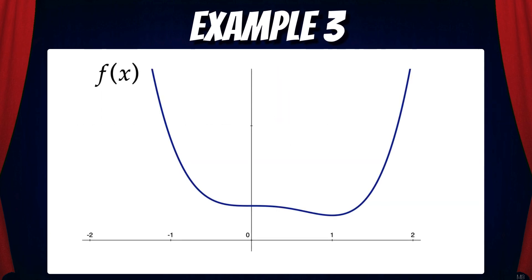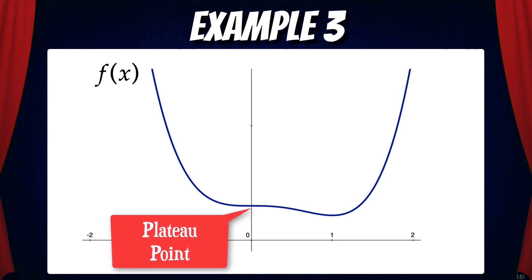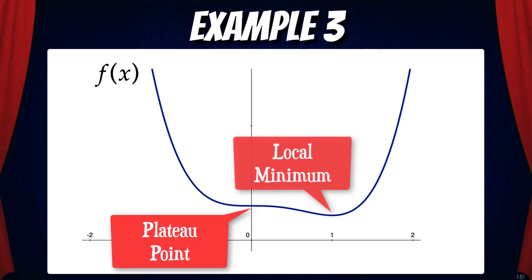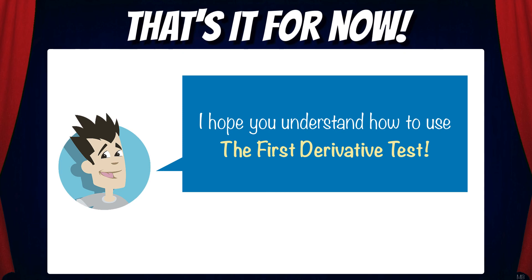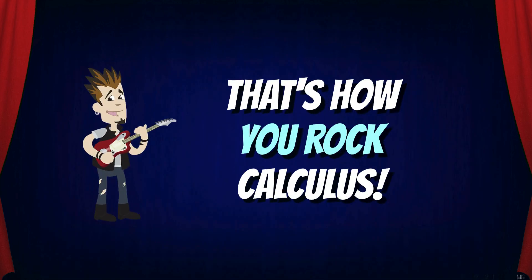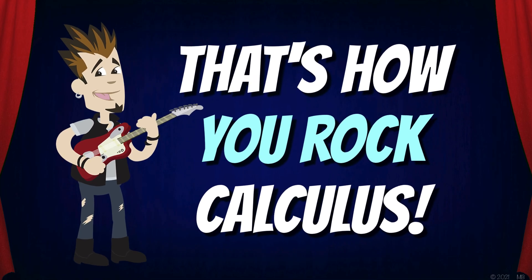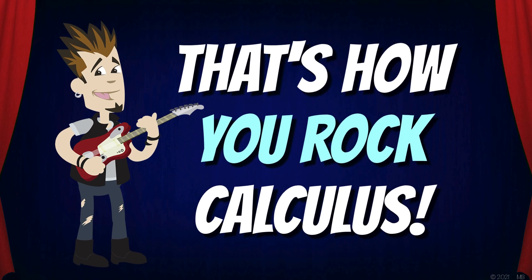Here's a graph of f of x where we can see a plateau point at x equals zero and a local minimum at x equals one, as we confirmed with the first derivative test. Well, that's it for now. I hope you understand how to use the first derivative test. And that's how you rock calculus!